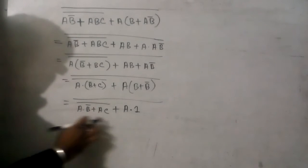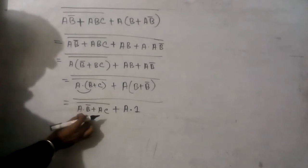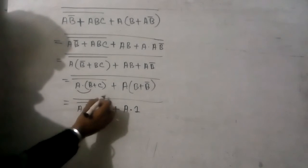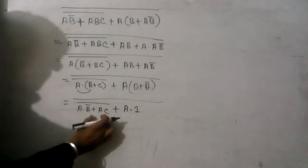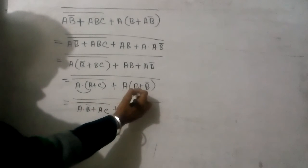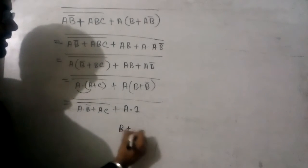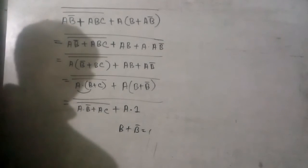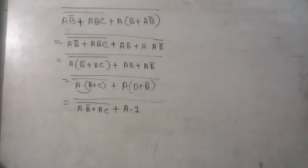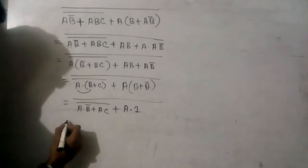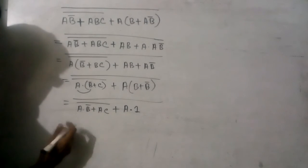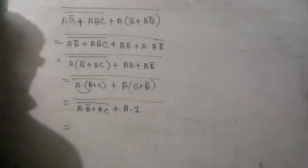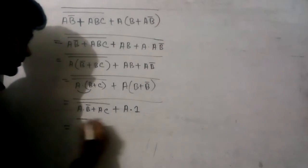Under this section is plus A·B̄, yeah. After plus A·C, after A·C. Plus A — we know that B plus B̄ is 1, so I have written here 1. A·B, A into 1·B, A into 1 again.